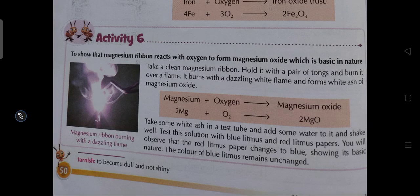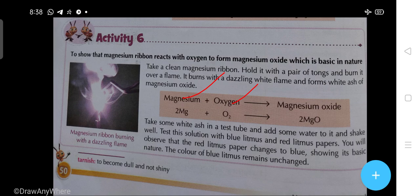Activity C6: to show that magnesium ribbon reacts with oxygen to form magnesium oxide, which is basic in nature. Take a clean magnesium ribbon, hold it with tongs, and burn it in a flame. It burns with a dazzling white flame and forms white ash of magnesium oxide: 2 Mg + O₂ → 2 MgO. Take some white ash in a test tube, add water, and test with blue and red litmus paper. The red litmus changes to blue, showing the basic nature of magnesium oxide; blue litmus remains unchanged. Tarnish means to become dull and not shiny.